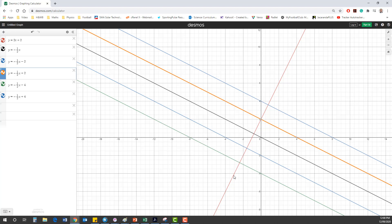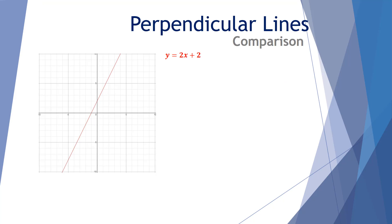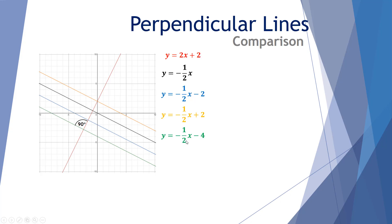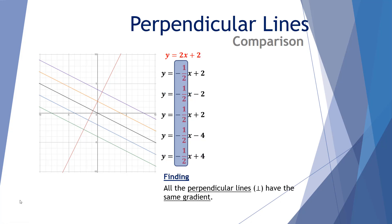All five lines are perpendicular to y equals 2x plus 2 because their gradients of negative a half multiply with 2 to give negative 1. Summarising: the red line is y equals 2x plus 2; the five perpendicular lines are y equals negative a half x, y equals negative a half x take 2, y equals negative a half x plus 2, y equals negative a half x take 4, and y equals negative a half x plus 4. Our finding: all perpendicular lines have the same gradient, but it is different from the original line's gradient.